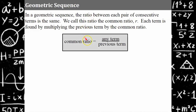You can determine whether a sequence is geometric by taking any term and dividing it by its previous term. If you do this for several terms and get the same value, that's the common ratio r.